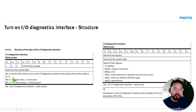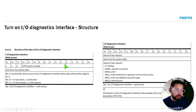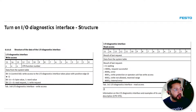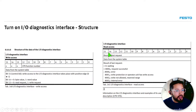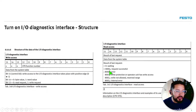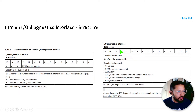Bit 15 is the execute bit — it triggers the request. Once you write this on the outputs, you get a response on the inputs, described in the read axis table. If you get 0x8000 in the first word, that means the request was successful, and the actual result data comes back in the second byte.